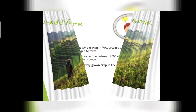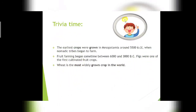Here are some facts about agriculture. The earliest crops were grown in Mesopotamia, near modern-day Iraq, around 5500 BC when nomadic tribes began to farm. Fruit farming began sometime between 6000 and 3000 BC, and figs were one of the first cultivated fruit crops. Wheat is the most widely grown crop in the world.